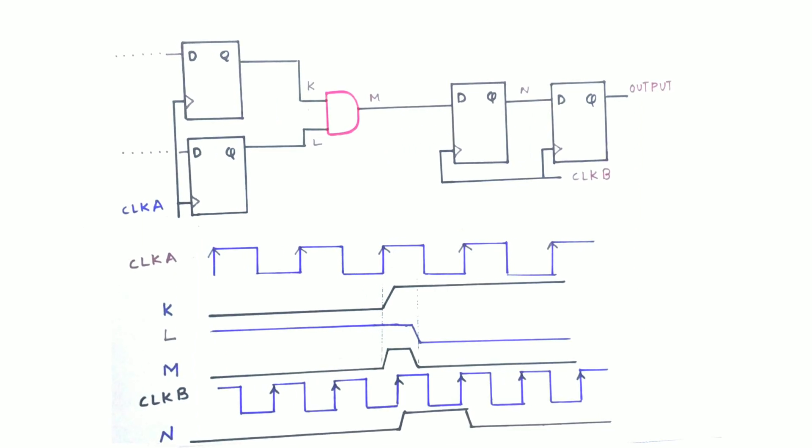So now let us look at waveforms. We have two clocks clock A and clock B and signals K, L, M and N. So K and L are the inputs of the AND gate and M is the output of the AND gate, and N is the output of the flop which is present in clock B clock domain.